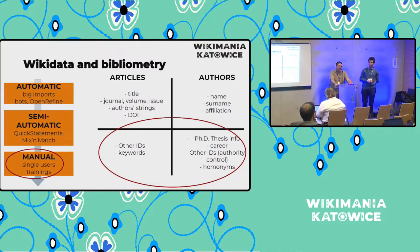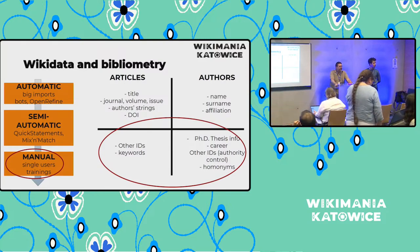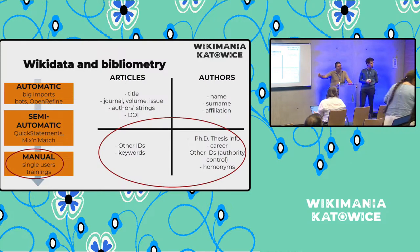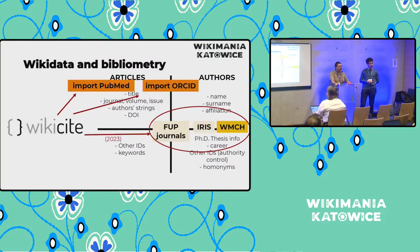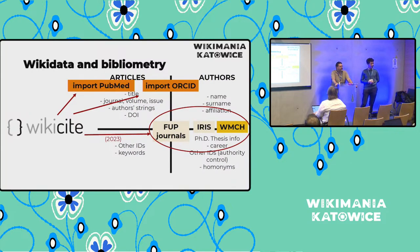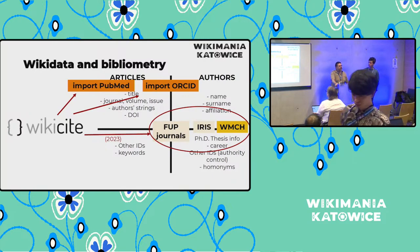Big automatic and semi-automatic imports are designed to handle the first part of the graph, which is what has been happening in recent years. We are now in a phase where manual refinement of the lower, richer part of the graph is becoming increasingly important. Our project was added under the WikiCite umbrella because it was more functional to have a unique brand for all bibliometry-related activities on Wikidata.